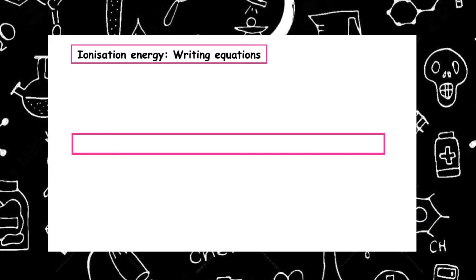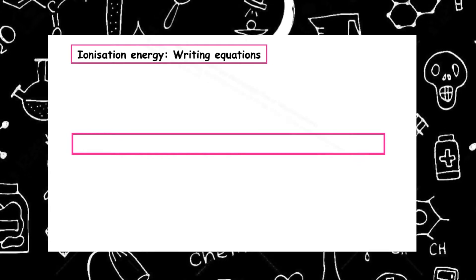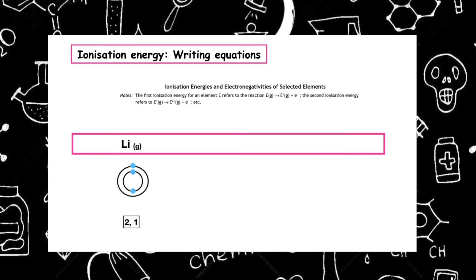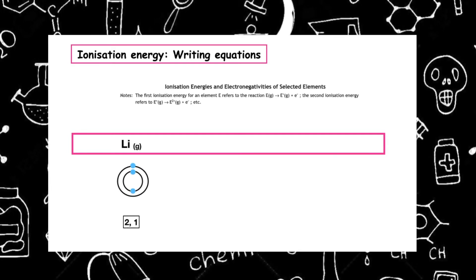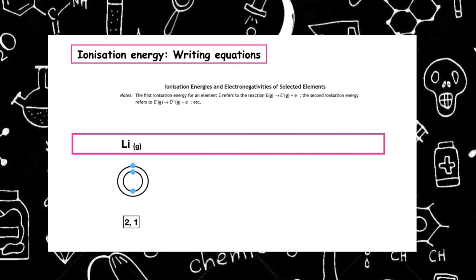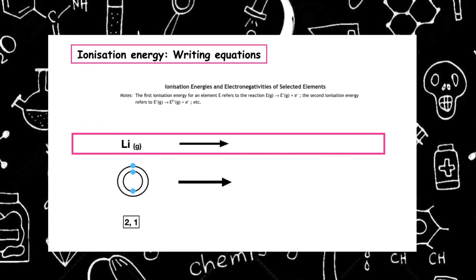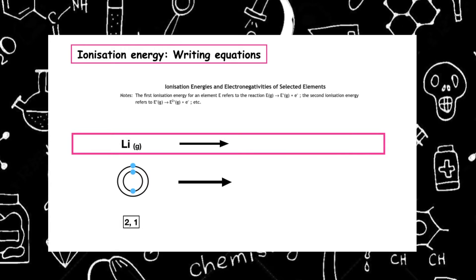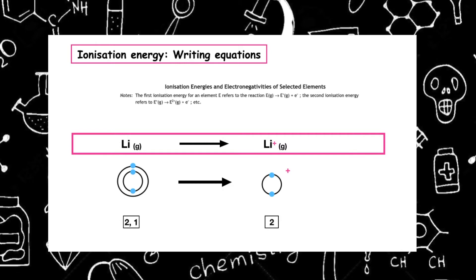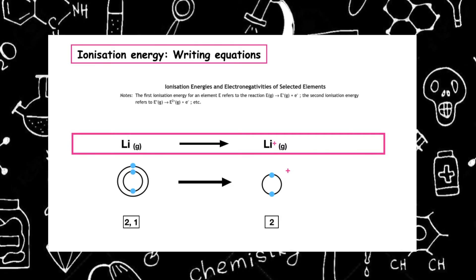One of the skills you'll be asked to do is to write the ionization energy equation. You can use the top of page 12 as a guide. Taking the lithium atom as an example — it has the electron arrangement 2,1. Ionization energy is when one mole of electrons is removed from one mole of atoms in the gaseous state. So we write Li(g) losing an electron to become Li⁺(g) plus an electron.